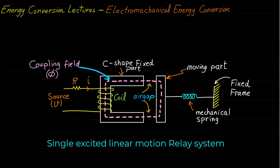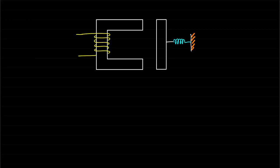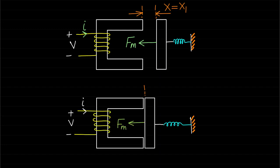Let's explain graphically what happens when the moving part moves towards the C-shaped magnet. Assume the air gap distance is represented by the variable x, and the original distance of the air gap is where x equals x1. Initially, the force fm is 0 at x equals x1, and as the voltage is applied, the force fm increases until the moving part reaches the C-shaped magnet at x equals x2.